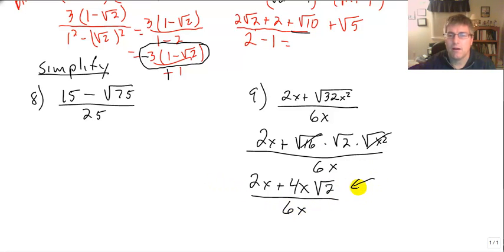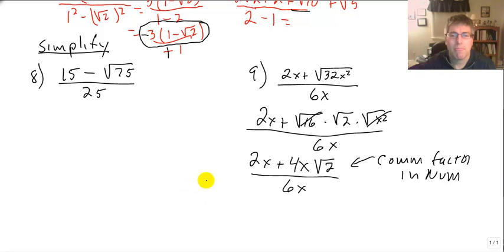But in here, there is a common factor in our numerator. So I am going to factor out the common factor of the numerator. That common factor is 2x, leaving me with 1 plus 2x squared of 2 all over 6x.